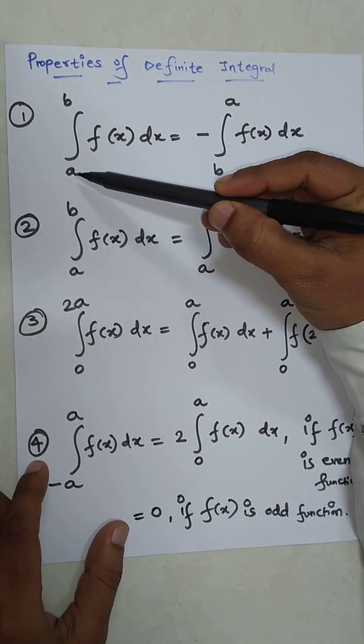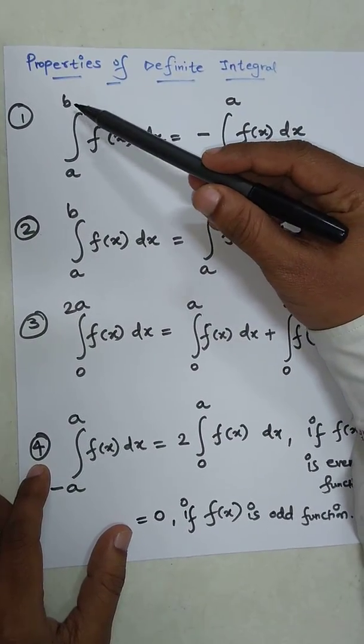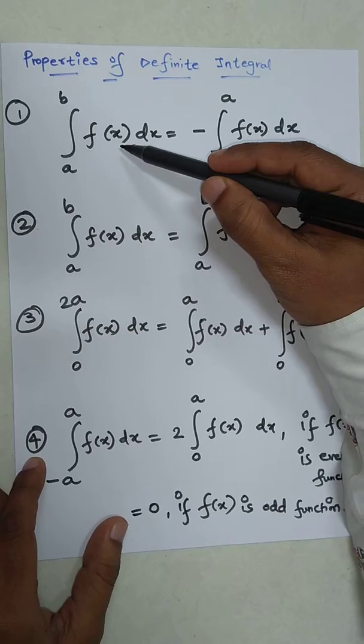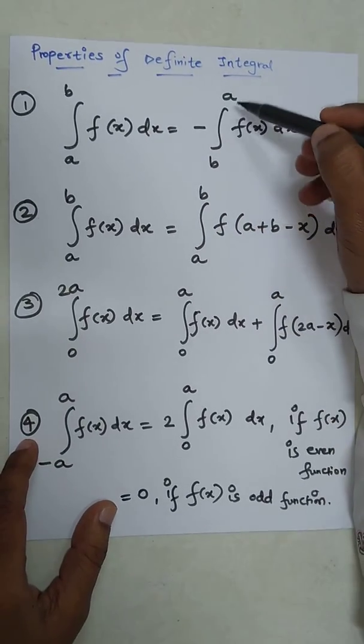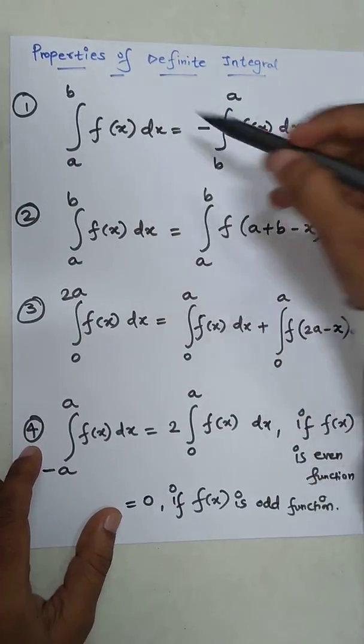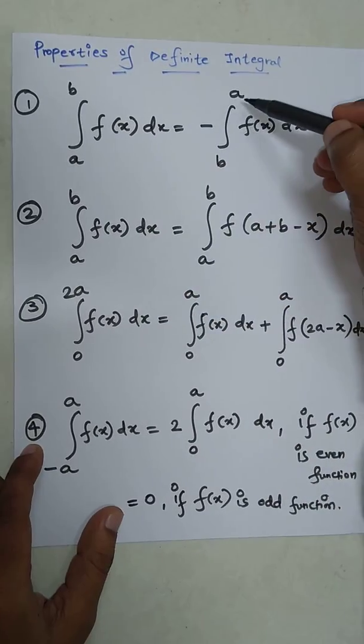First one is the limits lower limit a, upper limit b, f of x dx. So this thing if we want, we can write as changing the limit. So now b is lower limit and a is the upper limit.